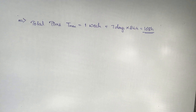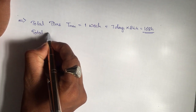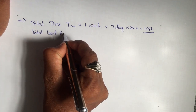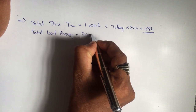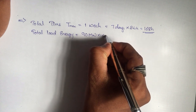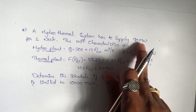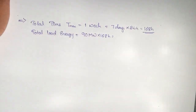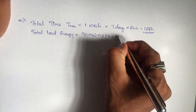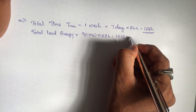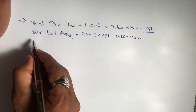The total load energy is equal to 90 megawatt for 168 hours — the system has to supply 90 megawatt for one week. So 90 megawatt × 168 hours gives a total load energy of 15,120 megawatt hour.